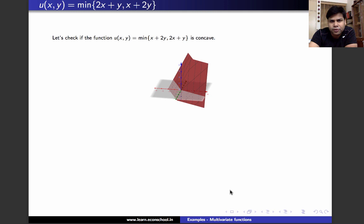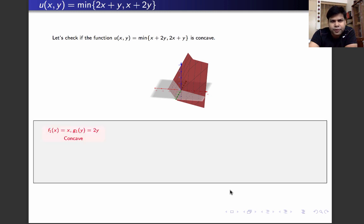If you see in picture, this is how the function is going to look. In order to prove it, we're going to use the following two functions f1(x) and g1(y) defined as x and 2y respectively. Both are linear functions and therefore they are concave functions.